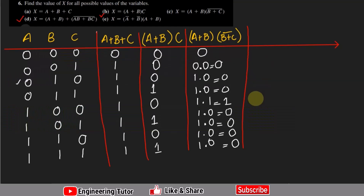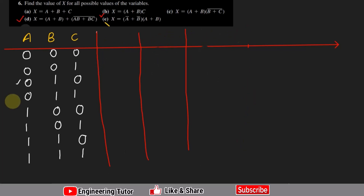Welcome back. This is question number 6 and previously we have solved parts a, b, and c of this question while d and e were left. Today we are going to talk about parts d and e. Here we have X, and X is equal to (a plus b) plus (ab plus bc) whole complement.